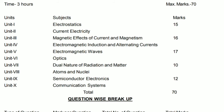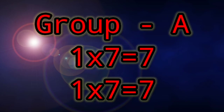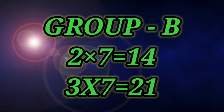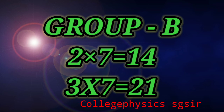Now for the question pattern: Group A carries 14 marks. The first seven questions each carry one mark and are mainly multiple choice questions with four options. The next seven questions also carry one mark each and are mainly short direct questions and answers. So Group A total is 14 marks.